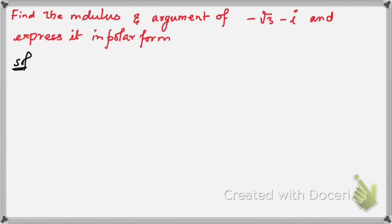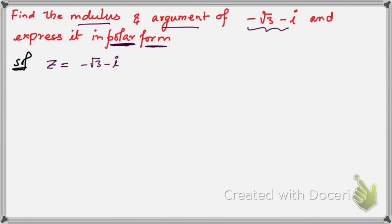Now let's start. We need to find the modulus and argument of a complex number and also express it in polar form. Our given complex number is z = -√3 - i. Comparing with a + ib, we have a = -√3 and b = -1, since we can consider this as -i × 1.